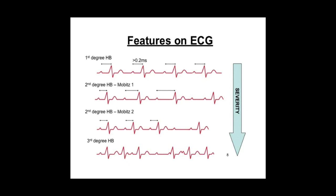In Wenckebach, after the beat is missed, it resets back to the beginning. Whereas in type two, the PR interval is constant, but you may have two P waves per QRS complex, or sometimes even three. And in third degree heart block, the P waves are in no way correlated to the QRS complexes — you have atrial activity and ventricular activity occurring independently. And as it's a ventricular rhythm, the complexes will be wide.